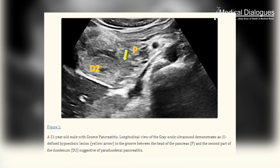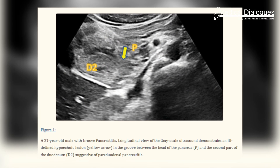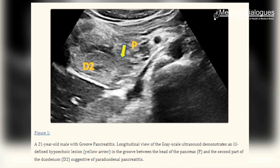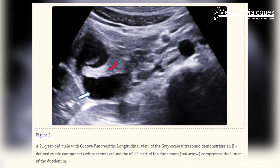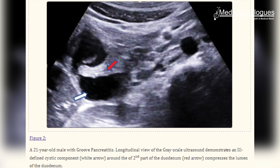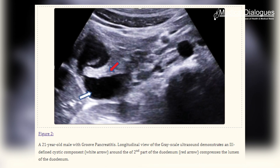Abdominal ultrasonography was performed. A hypoechoic lesion was noted in the space bounded by the pancreatic head and duodenal wall, which showed no vascularity on color Doppler. The second part of the duodenum appeared thickened. Cystic changes were noted in the paraduodenal space, compressing the lumen of the duodenum. The pancreatic body and tail were unremarkable; the main pancreatic duct and CBD were not dilated. There was no obstruction or encasement of peripancreatic vessels throughout their course.